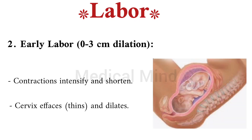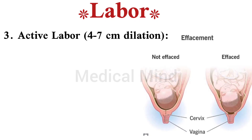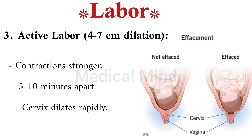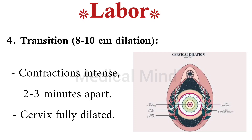Contractions intensify and shorten; cervix effaces, thins, and dilates. Three, active labor: four to seven centimeters dilation, contractions stronger, five to ten minutes apart; cervix dilates rapidly. Four, transition: eight to ten centimeters dilation, contractions intense, two to three minutes apart.